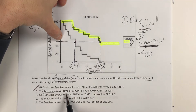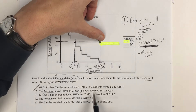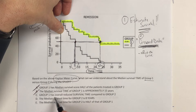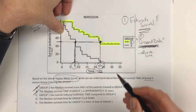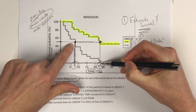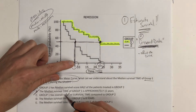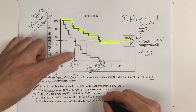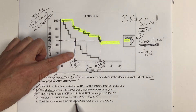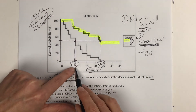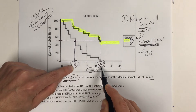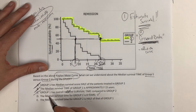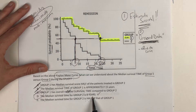Is the median survival time of group one approximately 15 years? No — 15 years is not the median. Is group one's survival overall reduced compared to group two? No — group one actually has an increased median survival compared to group two. Is the median survival time of group two eight years? Yes — that looks right. The best answer is D: the median survival of group two is eight years.